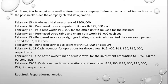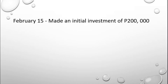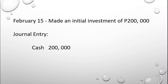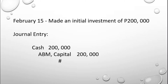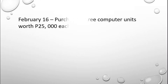The required task is to prepare journal entries, so we will journalize each transaction. For the first transaction, on February 15, an initial investment of ₱200,000 was made. Our debit is Cash ₱200,000 — the business received cash for the initial investment — and our credit is ABM Capital ₱200,000. Our asset increases by ₱200,000 and our capital increases by ₱200,000.